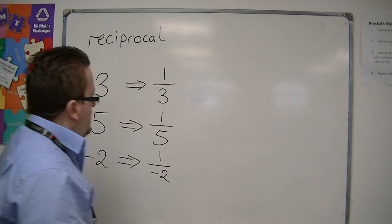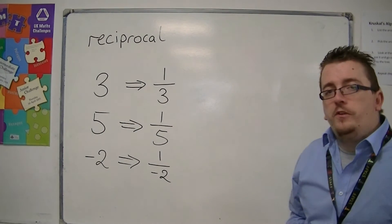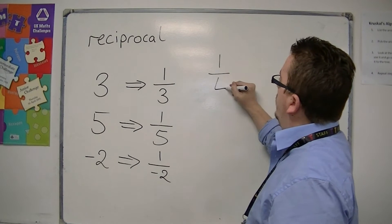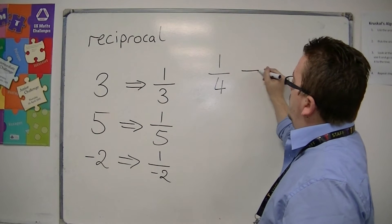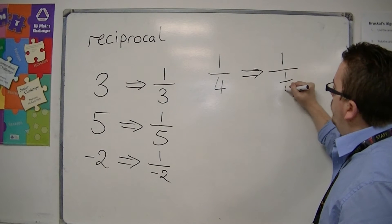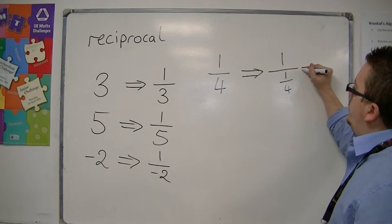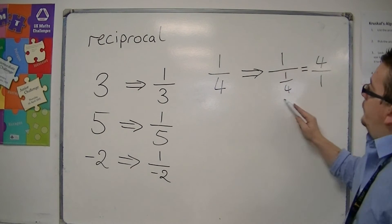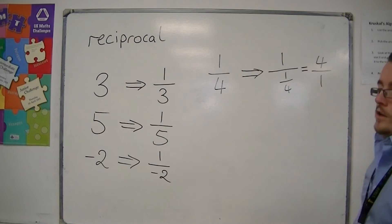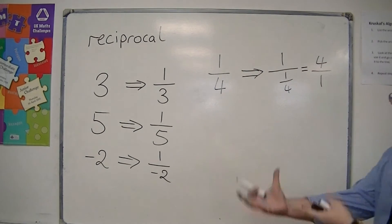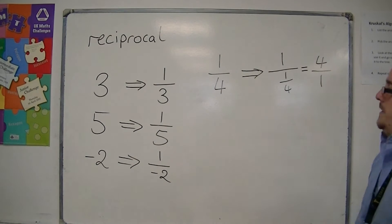Okay. Now, if you started off with a fraction, so if I said what is the reciprocal of 1 over 4, then the reciprocal of 1 over 4 is 1 over 1 over 4, which is actually the same as 4 over 1. So this process from here to here, you don't really need to know the mechanics behind it.